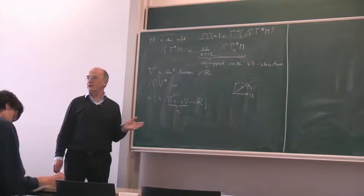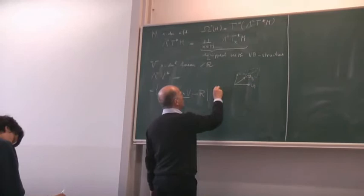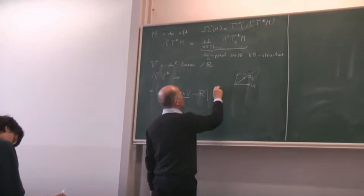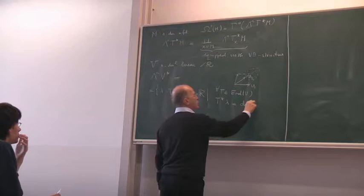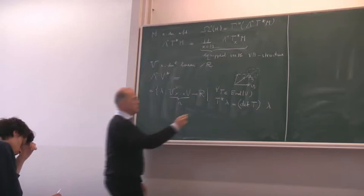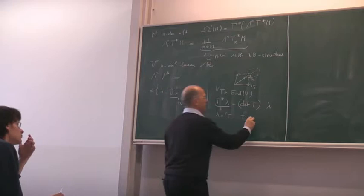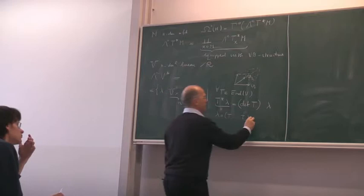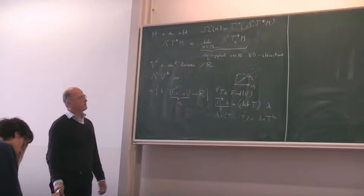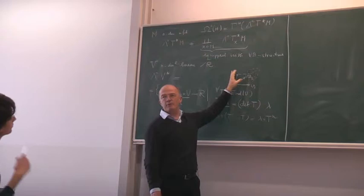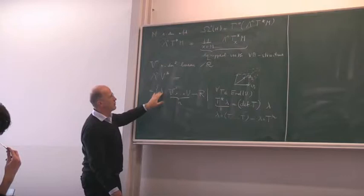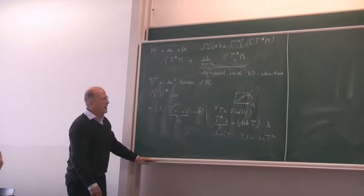Oriented volume should transform as a determinant under coordinate transformations. We require that for all linear maps T, the pullback of lambda by T is equal to lambda multiplied by the determinant of T. This pullback is really defined as lambda composed with T to the n. In other words, take a parallel pippet, apply the linear map, then the volume should transform according to the determinant. This is really a characterization of the n-th exterior power.